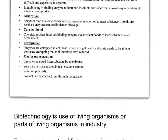Lastly, membrane separation: our enzyme is sequestered in some sort of membrane, and the substrate has to diffuse through the membrane, reacts with the enzyme, and then the product diffuses out of the membrane. The enzyme is separated from the substrate by a membrane. Substances permeate the membrane, but the enzyme can't, because the enzyme is too large. The reaction proceeds, and then the product permeates back out through the membrane.